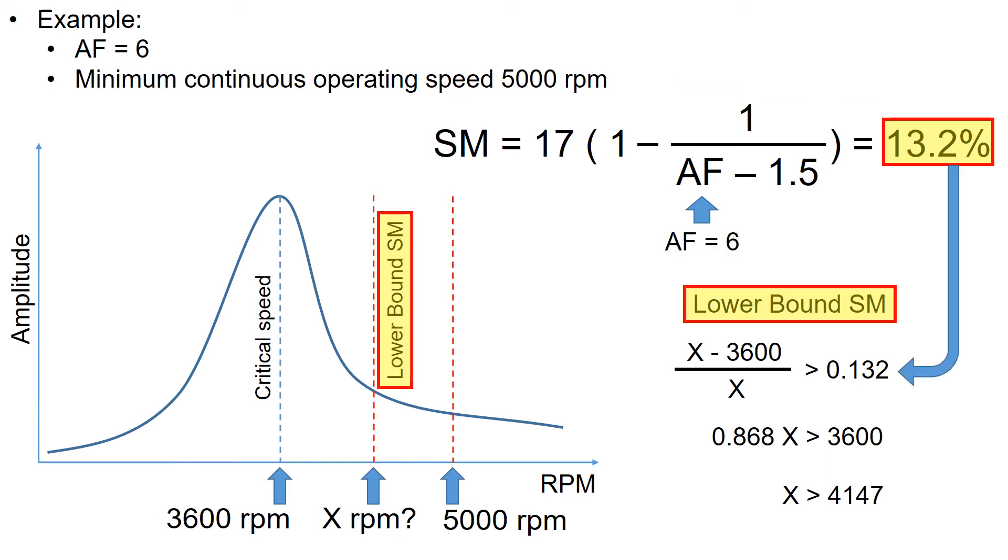Based on the 13.2 percent, you could calculate the lower bound of separation margin, which turns out to be 4147 rpm. This means that to have good integrity of the machine during their lifetime, the minimum continuous operating speed should be higher than 4147 rpm. So the minimum continuous operating speed of 5000 rpm given in this example is acceptable.